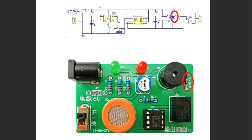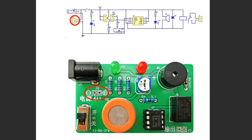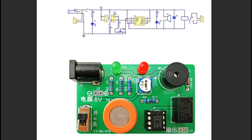Diode D3 is used to eliminate the induced electromotive force generated when the relay coil is turned on and off. The power supply interface can be a DC plug, or the line can be directly connected at the J2 position. Pay attention to the positive and negative signs — the DC plug is internally positive and externally negative. Thank you very much, Allison, for your detailed explanation of the circuit.